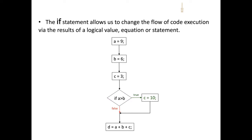Let's incorporate an if statement into our original sequential flowchart. We have assignments of A equals 9, B equals 6, and C equals 3. We come to our branching statement in the form of an if statement: we want to evaluate if A is greater than B. The outcome of this evaluation is a logical evaluation — it's either true or false. If it's true, we're going to assign a new value to C, which will be 10. If the condition is false, we'll proceed with our summation as originally intended.